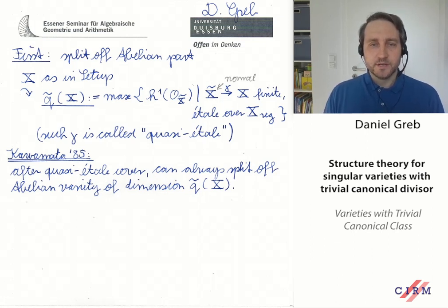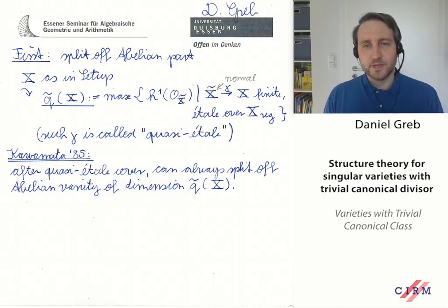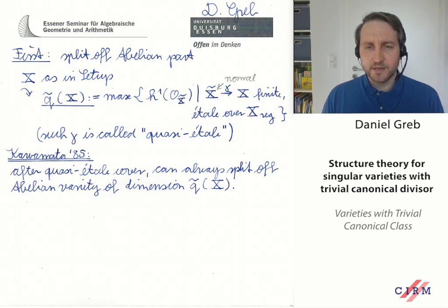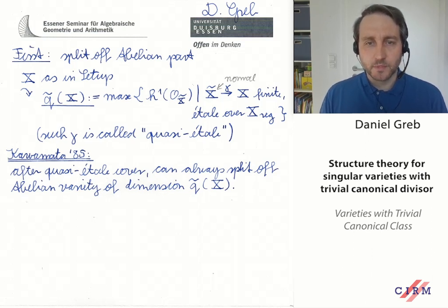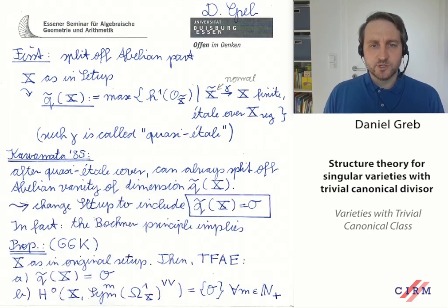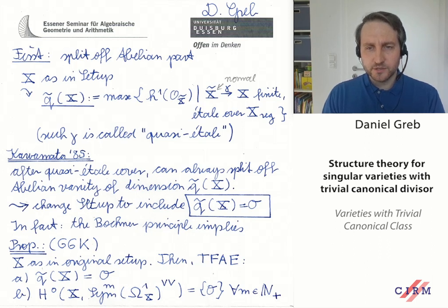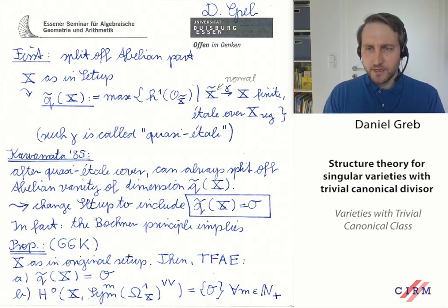After such a quasi-étale cover, you can always split off an abelian variety from X or X-tilde. This abelian variety has dimension exactly Q-tilde of X, and what remains has Q-tilde equal to zero. So you can solve the problem of splitting off the abelian part in an algebro-geometric way. Because of this result of Kawamata, I will change the setup to also include the condition that Q-tilde of X equals zero — so I am assuming I cannot split off any abelian variety, even by going to higher and higher quasi-étale covers.